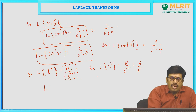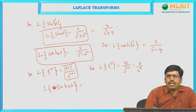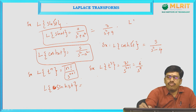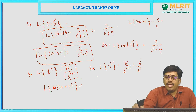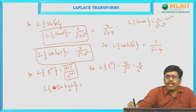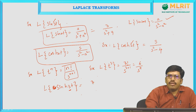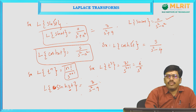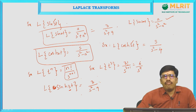The Laplace transform of sinh(at) is a/(s²−a²). For example, L{sinh 3t}: substituting a = 3 gives 3/(s²−9). This is how we find Laplace transforms of elementary functions.